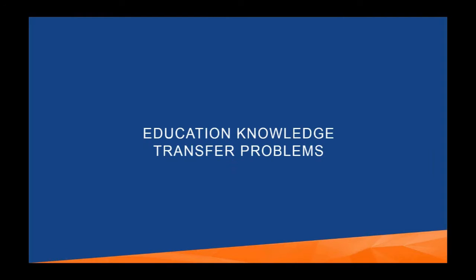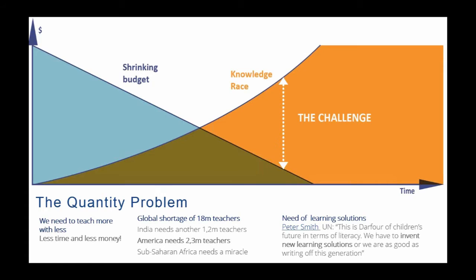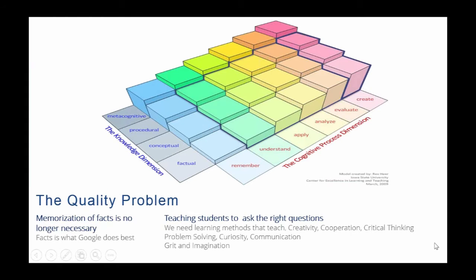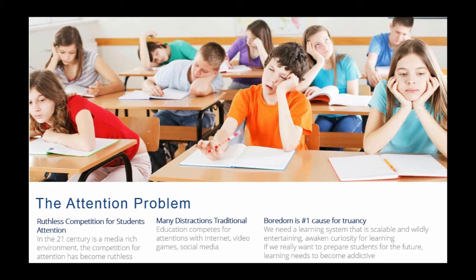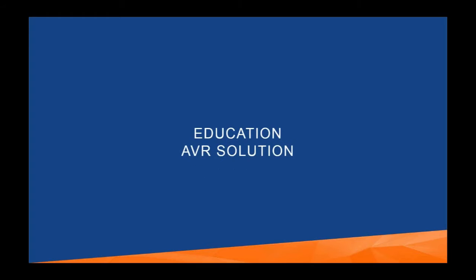We focus on addressing three key knowledge transfer problems. One is the quantity problem — how do we teach more with less time and less money? The quality problem — we need to change education, since memorizing facts is no longer necessary because Google does that best. We need to teach analytics, evaluation, critical thinking, problem solving, and enhance curiosity and imagination. And we need to address the attention problem — today there is ruthless competition for students' attention with many distractions.